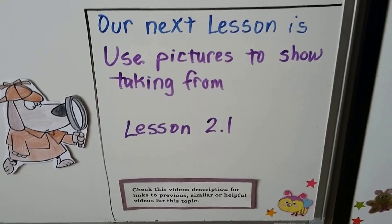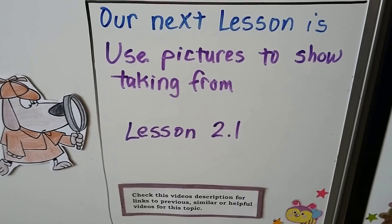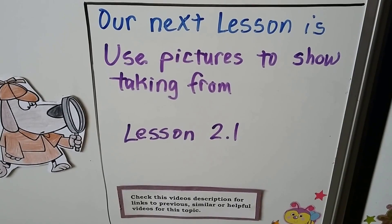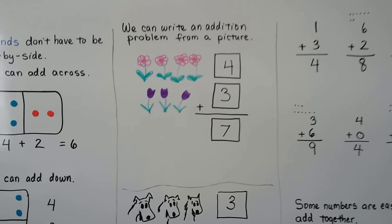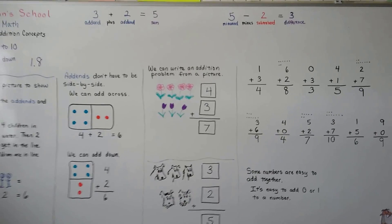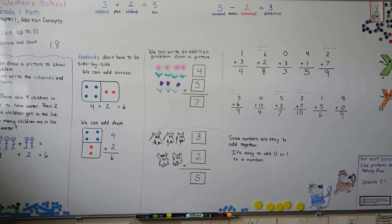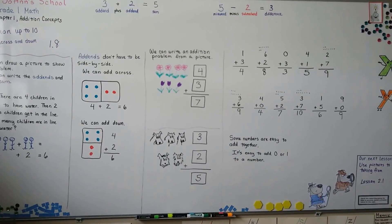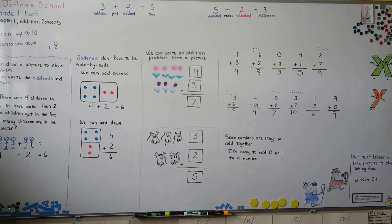Our next lesson is use pictures to show taking from — we're going to start working with subtraction. And that's lesson 2.1. We're going to start chapter two. I hope this video was helpful, and you now know how to add going down. We don't just have to add going across like a sentence — we can add going down and write our equations that way.